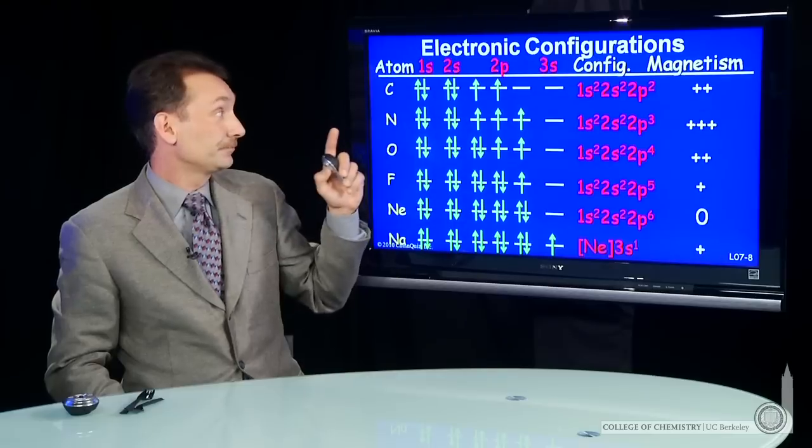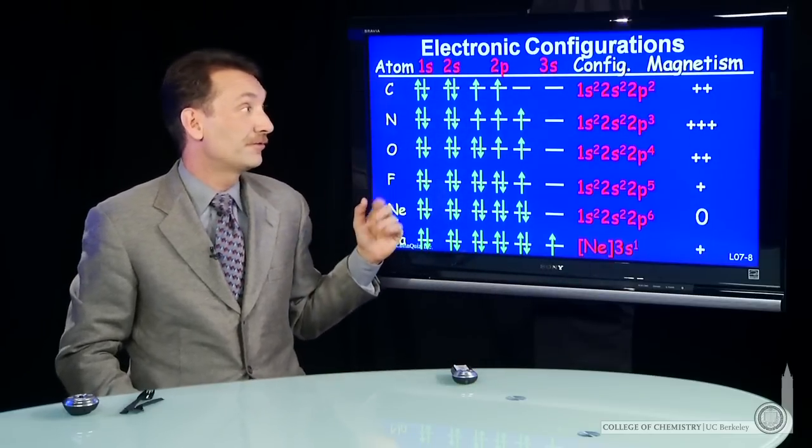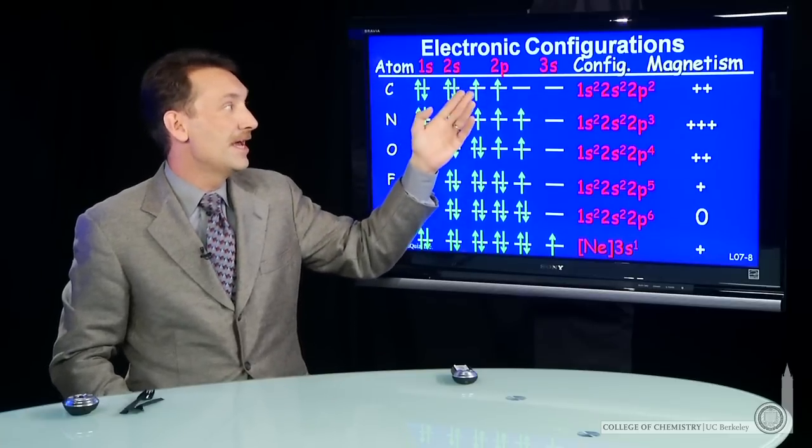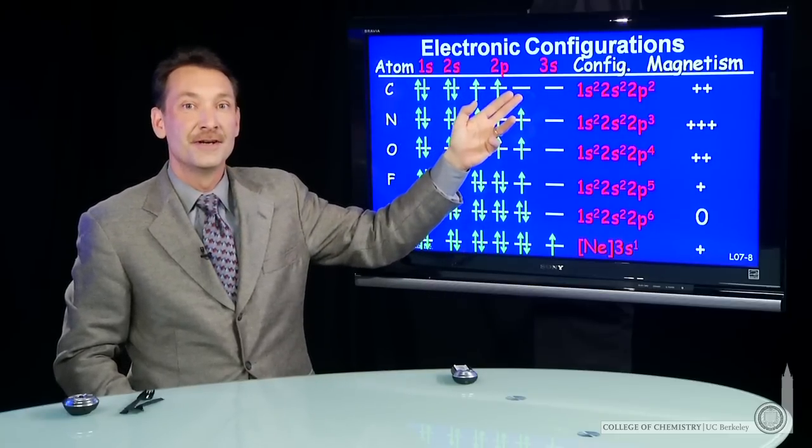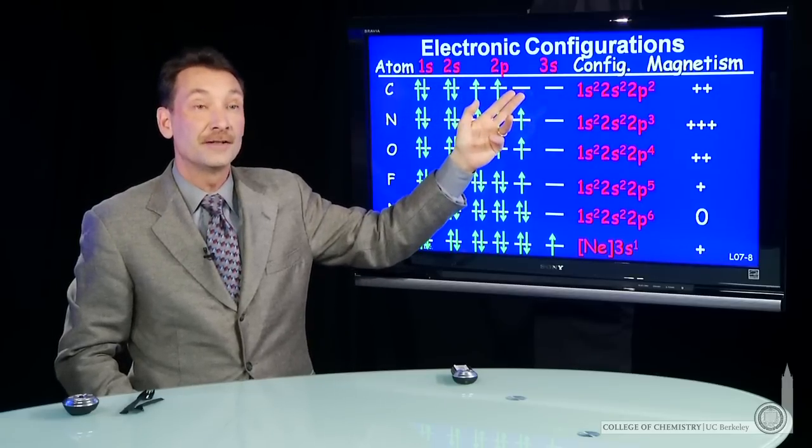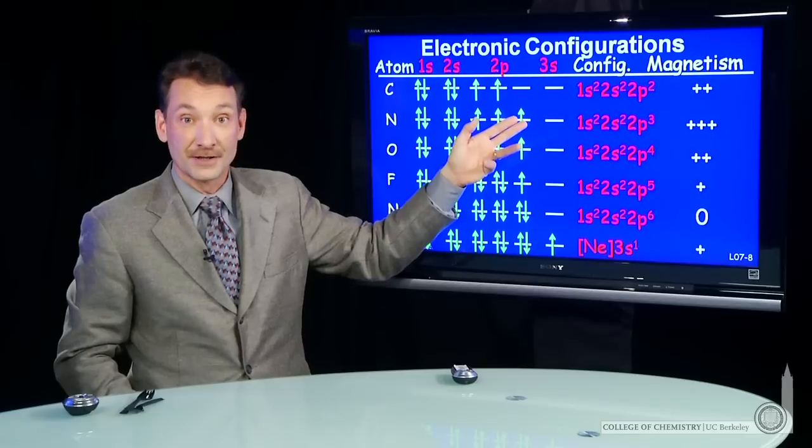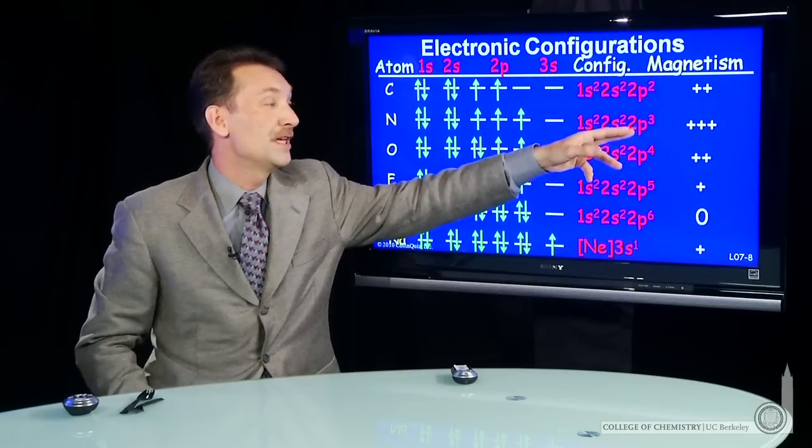Now we can continue. Here's carbon and nitrogen. You'll see that carbon has maximum multiplicity. The 2p orbitals are the same energy, so the spins go in parallel. Nitrogen, same thing, three unpaired electrons. So 1s2, 2s2, 2p3, three times as magnetic as carbon.